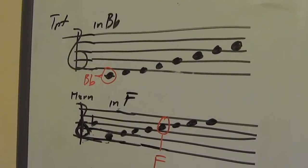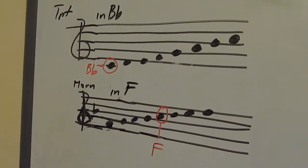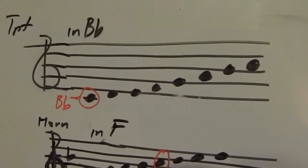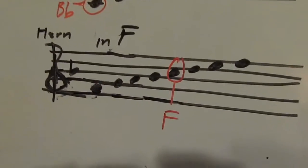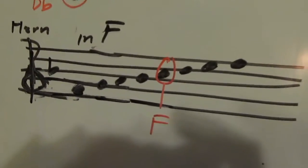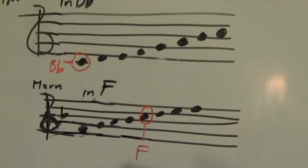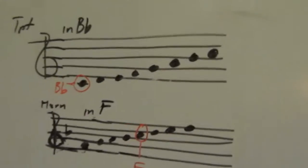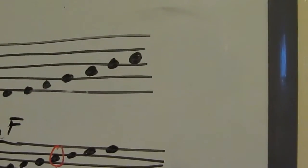To give you further information about reading in a different key, the top staff represents trumpet in Bb, and the bottom staff represents horn in F. Now, as you can see here, this is a C major scale, and this is an F major scale.